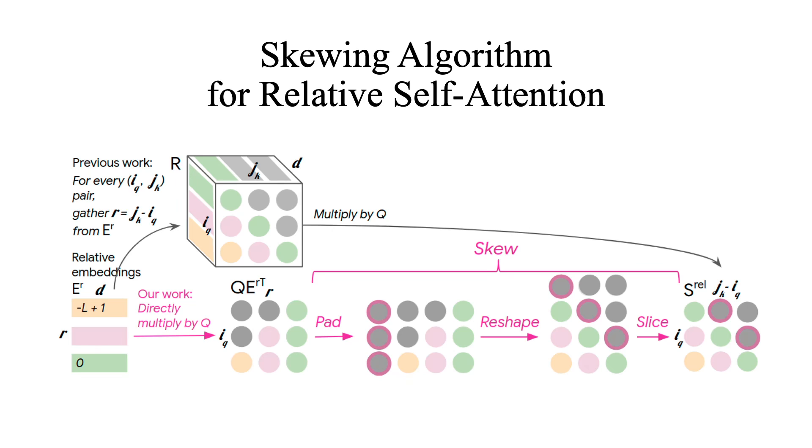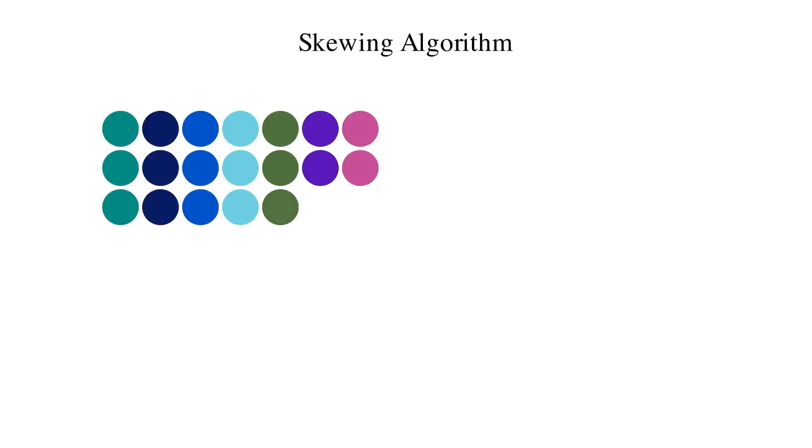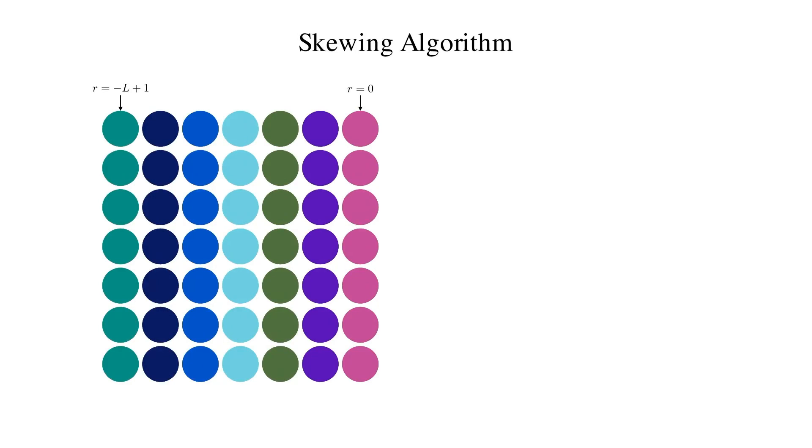The proposed skewing algorithm is shown in this diagram from the paper. But let's visualize the steps of the skewing algorithm. For this visualization, we assume we have this 7 by 7 matrix from QE transpose, where the columns indicate the relative position from r equals minus L plus 1 to 0, and each color corresponds to a specific r value. Note that in reality, the top left corner of the matrix could be masked, but for this visualization, we want to use colors for relative position only.